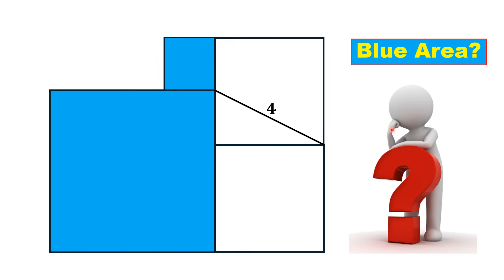Here, if a line segment is drawn from this point to this and having length equal to four units, then by this limited data we have to find the area of the blue shaded region, meaning the area of these two squares.